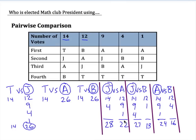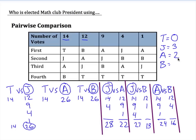Welcome back. In the remaining matchups, Jerry defeated Annette, Jerry defeated Becky, and Annette defeated Becky. Tallying up total points: Tom got 0, Jerry won 3 matchups for 3 points, Annette won 2, and Becky won 1. Whoever has the most points wins, and in this case Jerry is our winner.